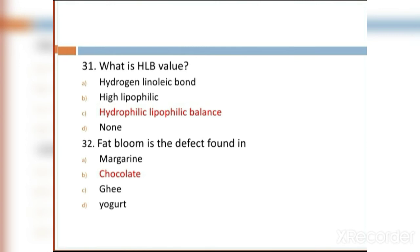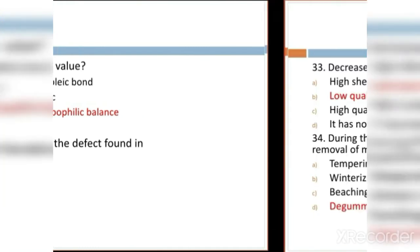MCQ 32: Fat bloom is the defect found in: Option A: margarine. Option B: chocolate. Option C: ghee. Option D: yogurt. Option B, chocolate, is the right answer.